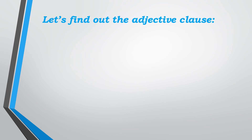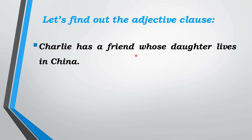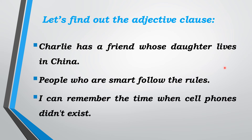Let's find the adjective clause in this sentence: 'Charlie has a friend whose daughter lives in China.' How do you find it? With the help of the relative pronoun 'whose.' 'Whose daughter lives in China' describes the noun 'friend.' So 'Charlie has a friend' is the main clause, followed by the adjective clause 'whose daughter lives in China.'